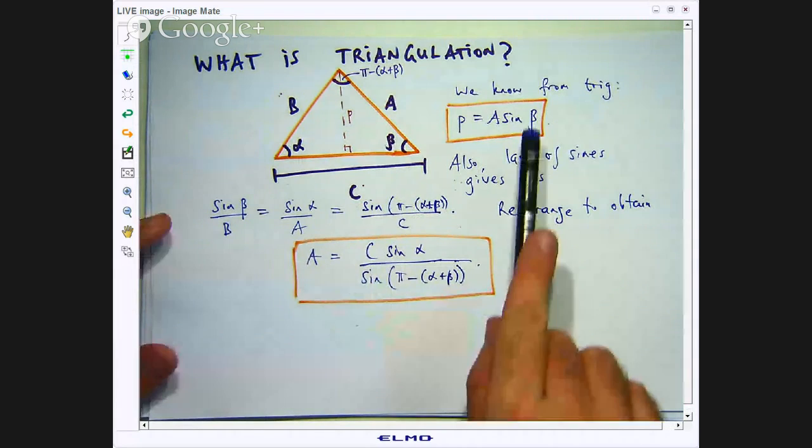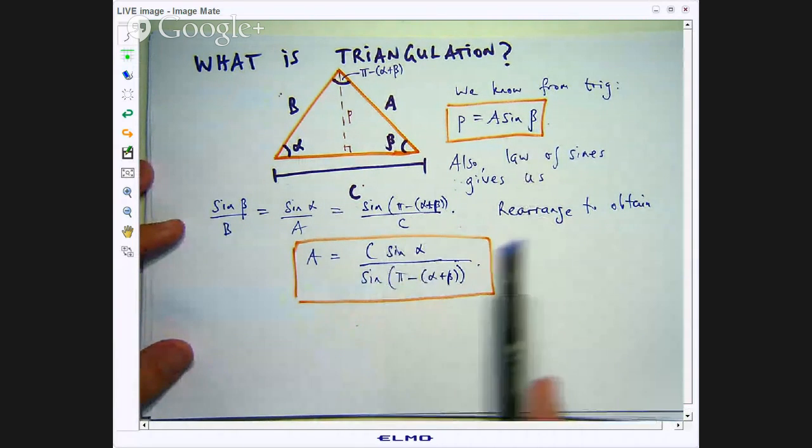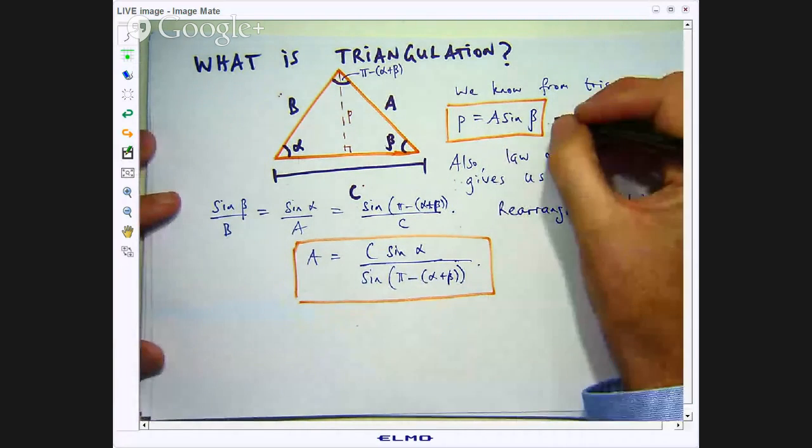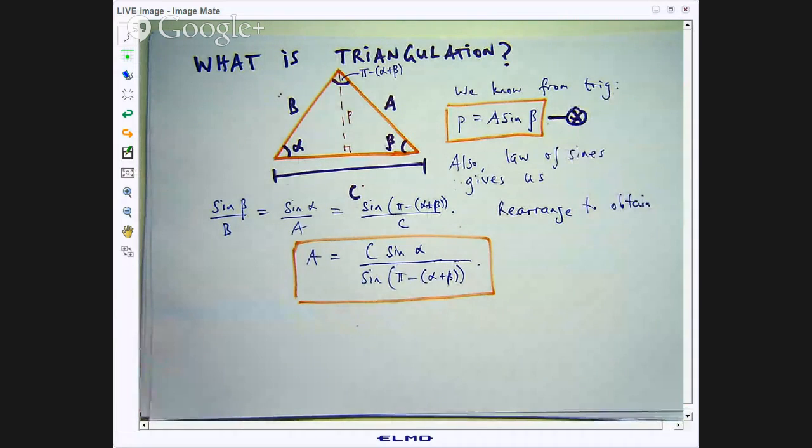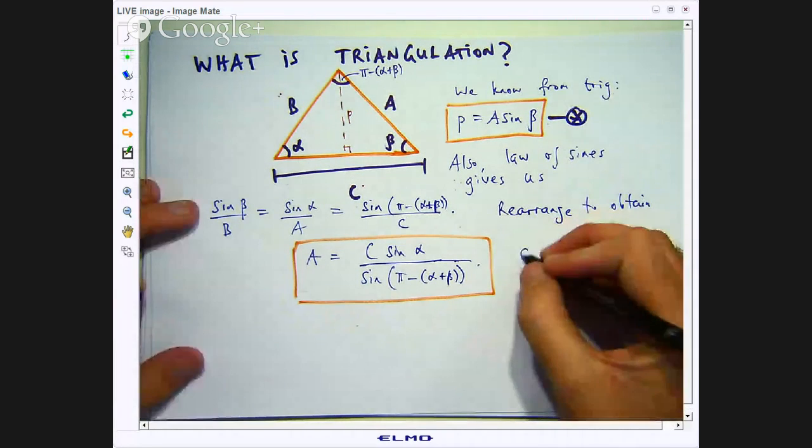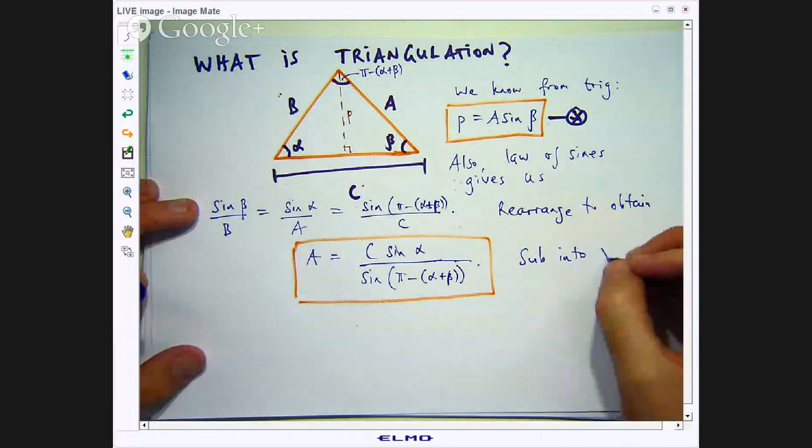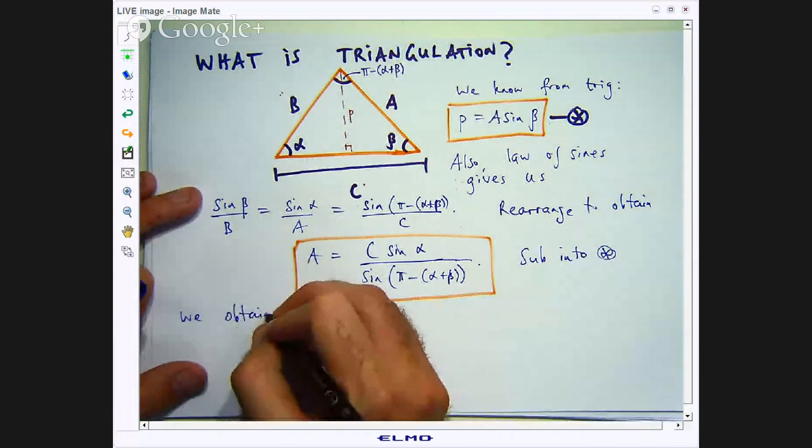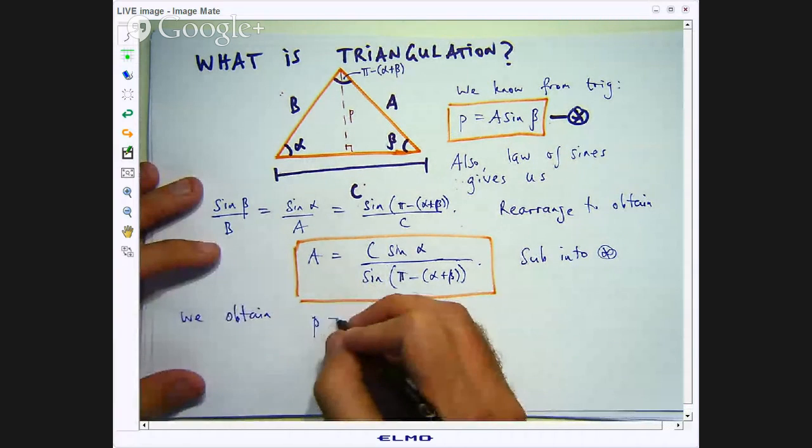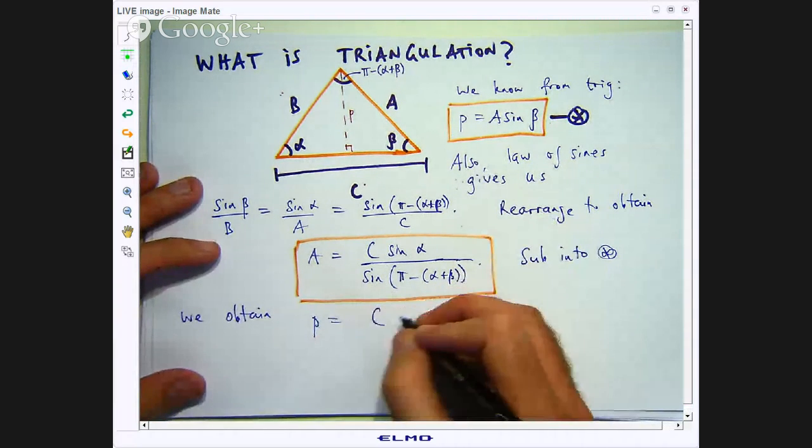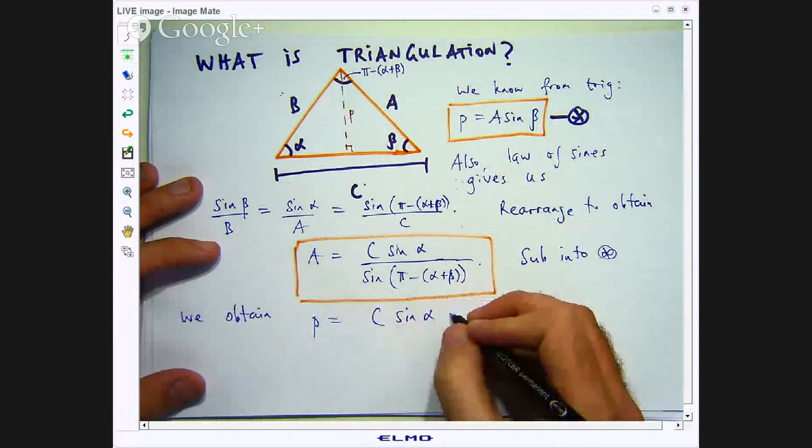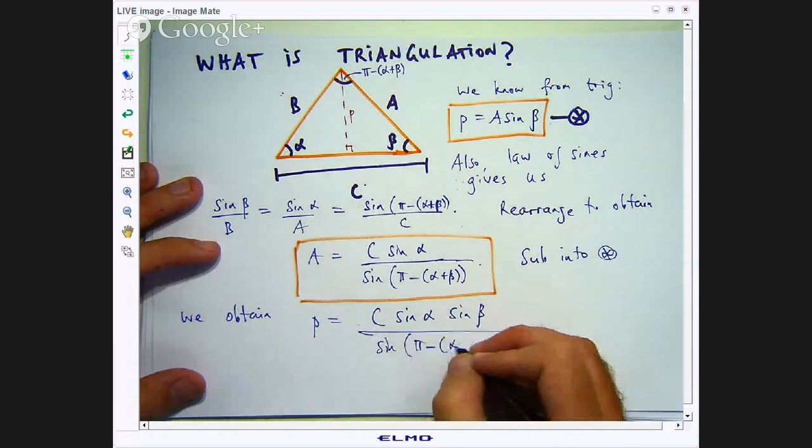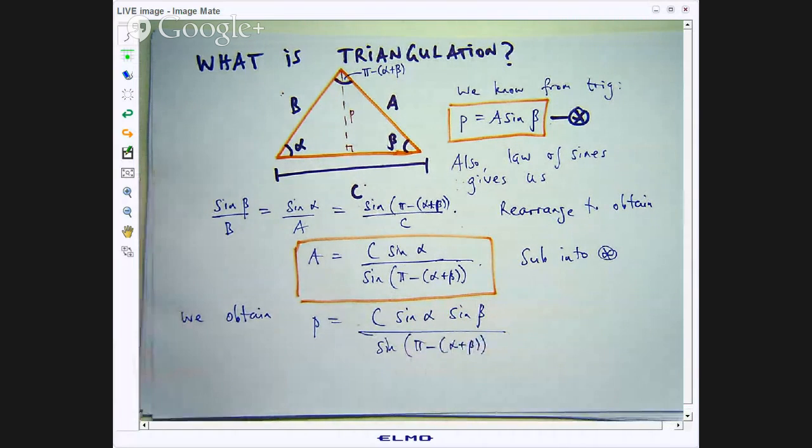So what now? Well what I can do is go up to here, replace a with this which I know how to calculate and then I can get my p. So if we sub into star we obtain the following. So replace a with this and I have the following.